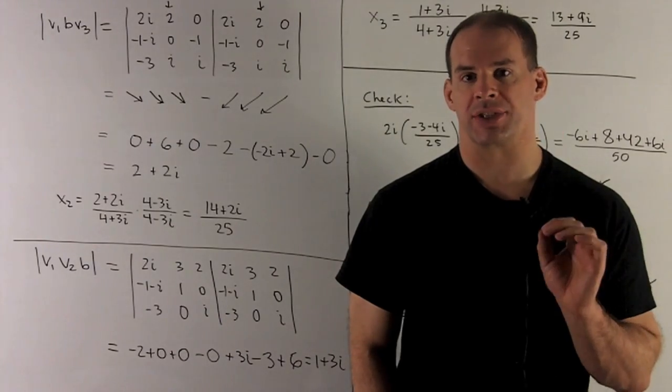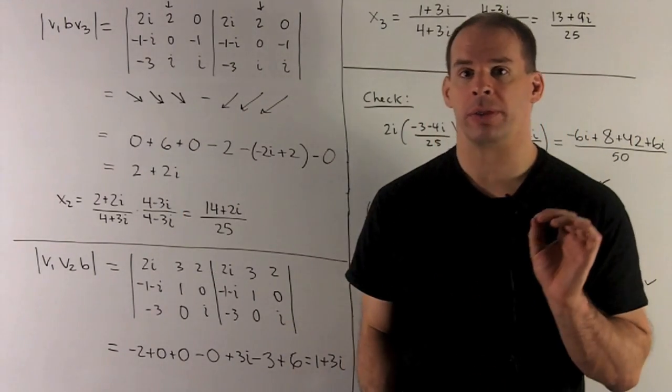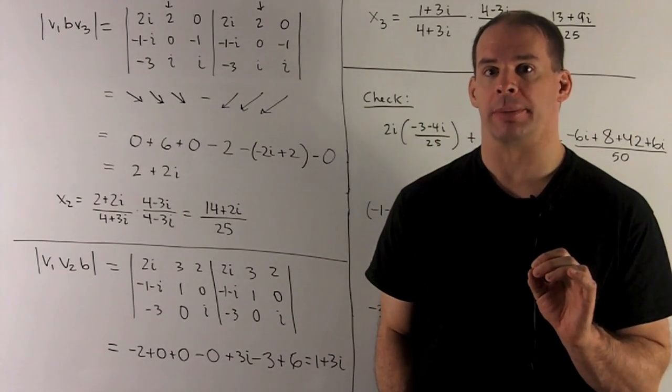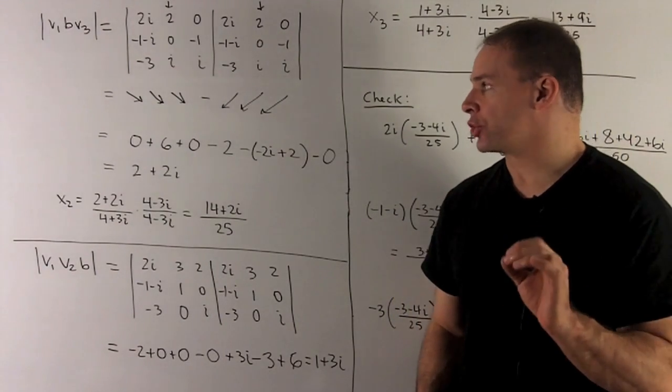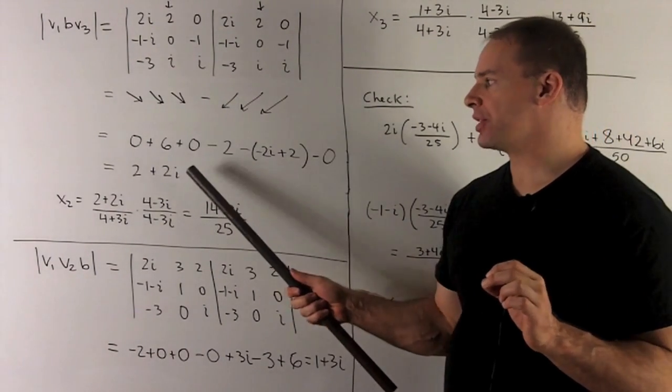Now to get X2, we take our matrix A, and I replace V2 with B, take the determinant. So we use our trick, the six diagonals. That's going to give me 2 plus 2i.